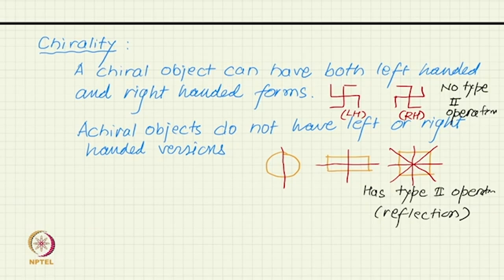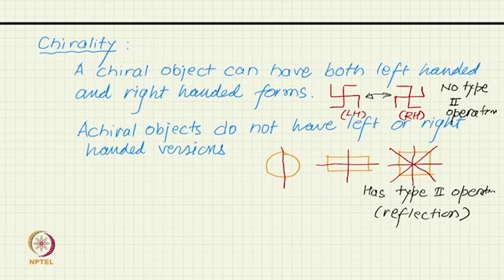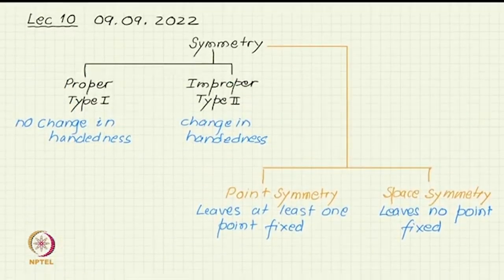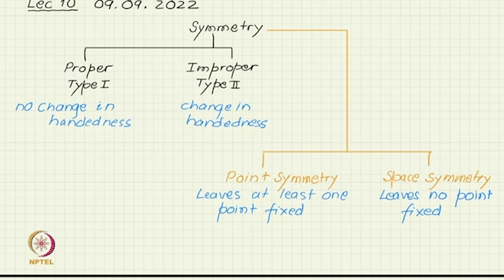If the two versions produced by an improper operation are indistinguishable, then the object is achiral. The difficulty is: if the two versions are not distinguishable, how do you say one is left-handed and one is right-handed? You could say the circle's left-handed and right-handed versions are the same — but then there is no way to identify which circle is left-handed. Whereas with the swastika, you can clearly identify two things that are not superimposable. We may disagree which is left and which is right, but we must agree there are two distinct types.